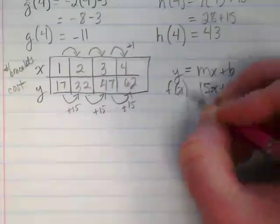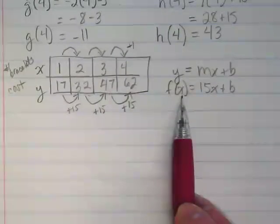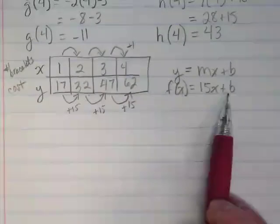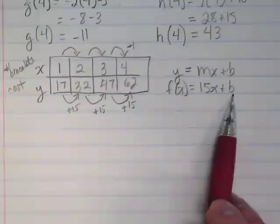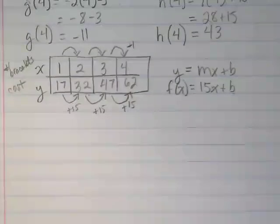And I can change this to f of x. So we're going to change the number of bracelets that go in here. And this plus b is just going to be pairs from the table once we create it.